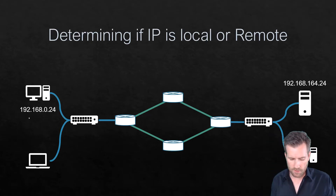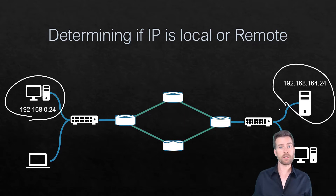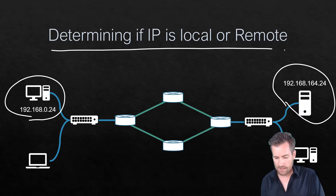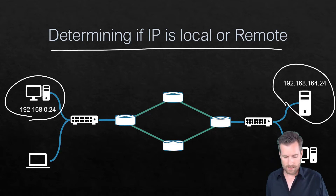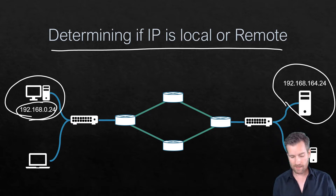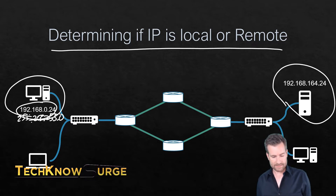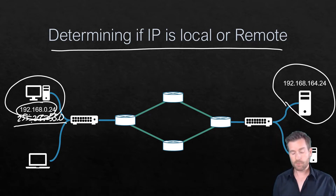In our scenario, we have a machine that is trying to talk to a server in another remote network. We're going to send this request over to that server. The first thing that needs to happen is determining if the destination IP address is remote or local. It knows its own IP address and the subnet mask — we'll say this is a class C address, so it's 255.255.255.0.